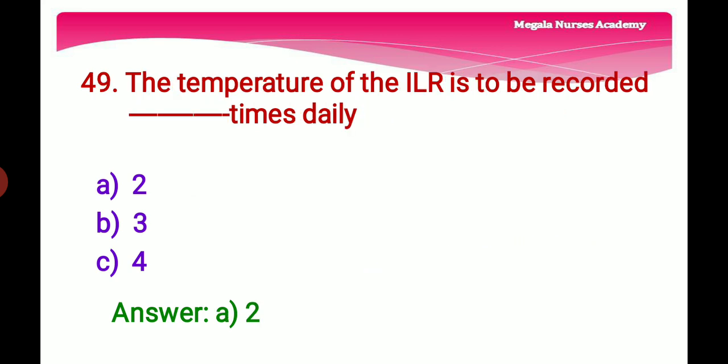Forty-ninth question: The temperature of the ILR (ice-lined refrigerator) is to be recorded — Option A: 2 times daily, Option B: 3 times daily, Option C: 4 times daily. The right answer is Option A, 2 times daily. The ILR must be monitored twice daily — morning and evening — to ensure vaccines are not exposed to temperatures above 8°C.